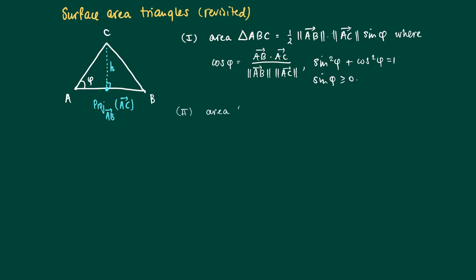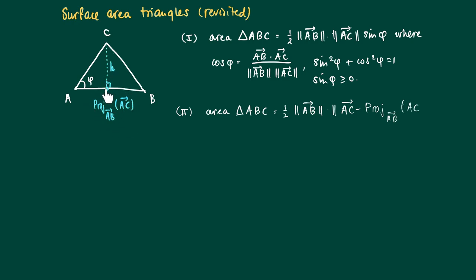The second option to calculate the area of triangle ABC is using the projection formula. Again, we have one half times the base AB, times the length of the difference vector of AC minus the projection of AC onto AB. So we get AC minus proj_AB(AC), which is the yellow vector indicated here.